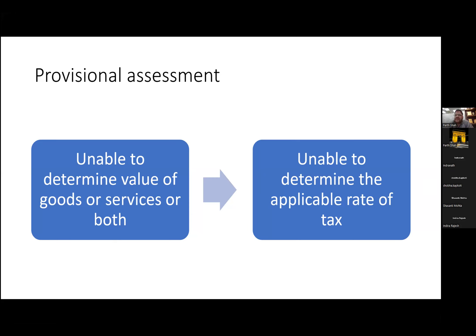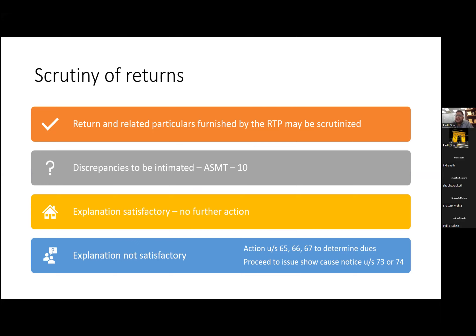The second touch point is scrutiny of returns, which is very common in GST. If you are registered in states like Maharashtra, Karnataka, or UP, many such notices are coming. Some states have automated the issuance of these notices, comparing figures from GSTR-1 and GSTR-3B and generating automated notices sent by email. It is important that we take care of these notices, respond to them properly and get the observations clearly clarified. These notices are issued based on returns and relevant particulars furnished by the taxpayer, so any issue raised has to be from the GSTR returns filed by you.